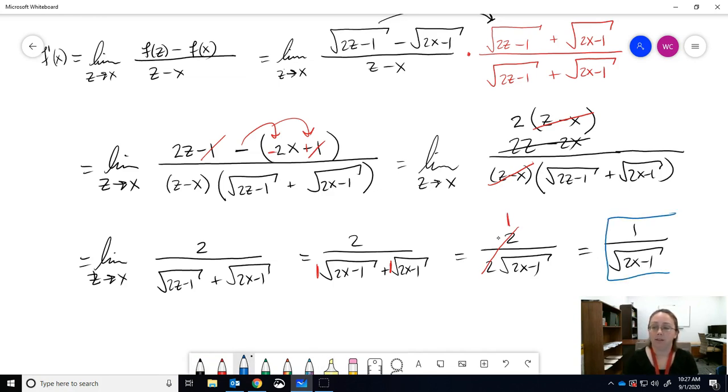What is this? This is the derivative of F of X. If you want to use the other limit process, the other definition formula, go for it. You should get the same answer. If you don't, you did something wrong.